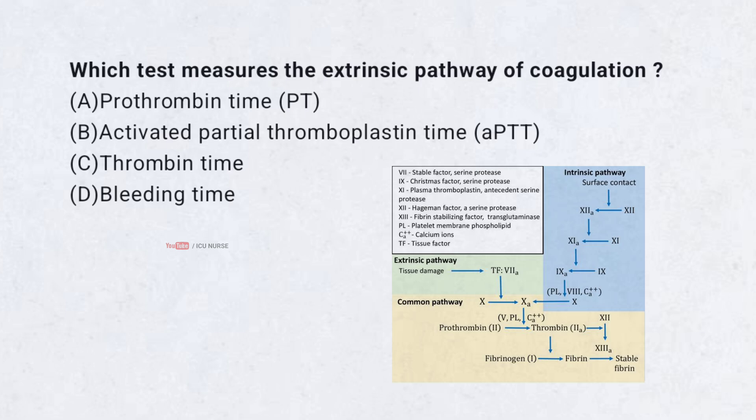Which test measures the extrinsic pathway of coagulation? A. Prothrombin time, B. Activated partial thromboplastin time, C. Thrombin time, D. Bleeding time. Correct answer: A. Prothrombin time (PT). PT assesses factors 7, 10, 2, and 5, which are part of the extrinsic pathway.